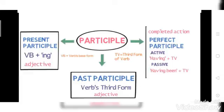Perfect participle में जब आपका action completed action बता रहा है, then यहाँ पे जब active sentence है, जब active है, then इसमें आपको having plus third form of the verb use करना है. And जब sentence passive में है, then आपको having been plus third form use करना है verb का. So, this is a very important point.